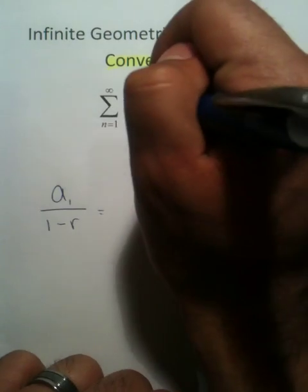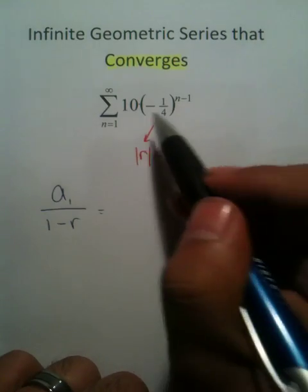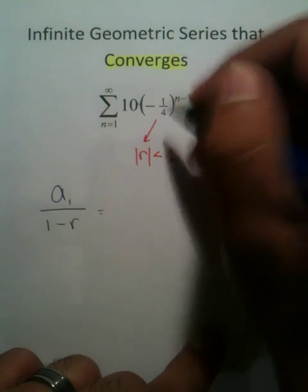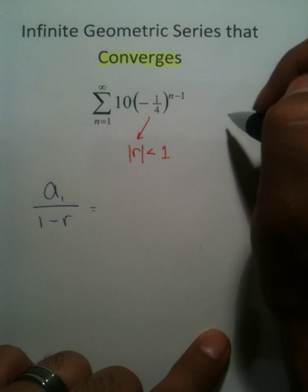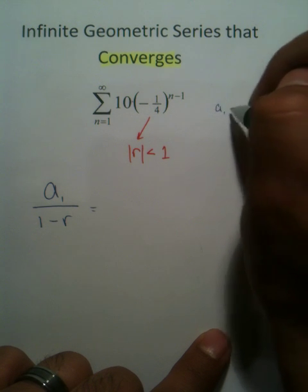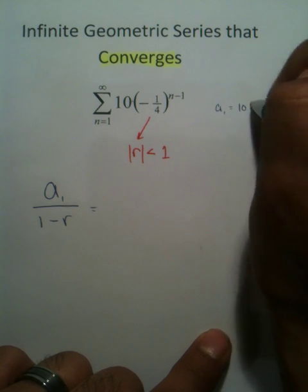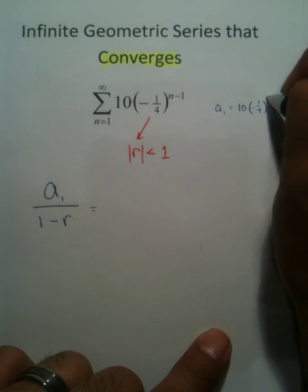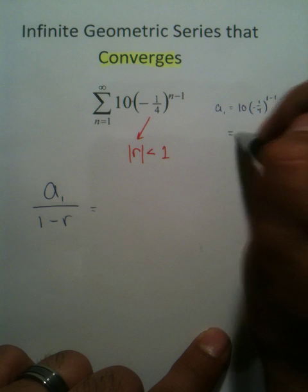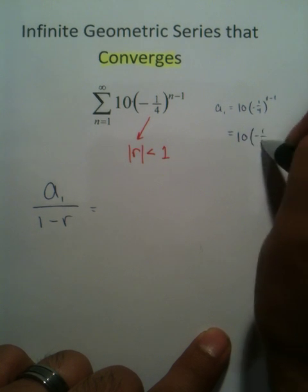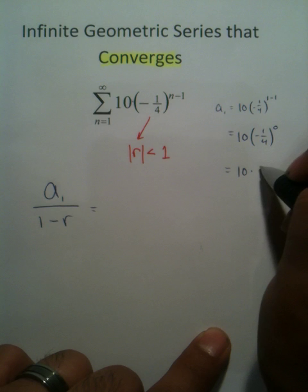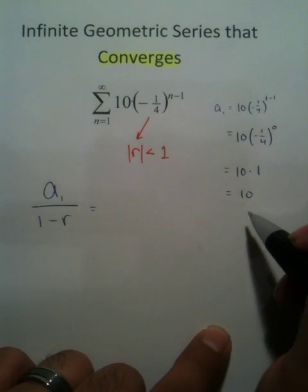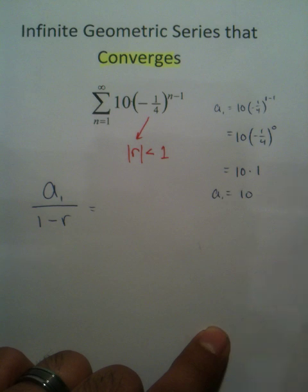Now, there are shortcuts to this. You can usually just look at the problem and instantly say, 10 is going to be my first term. But there are ways to prove this as well. The first term of the sequence would be 10 times negative one-fourth raised to the n minus 1 power, which is equal to 10 times negative one-fourth raised to the zero power, which equals 10 times 1, which is 10. So a1, the first term in your sequence, is 10.